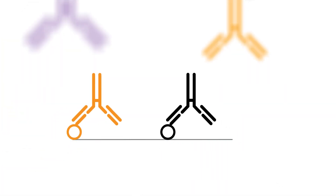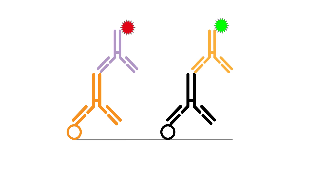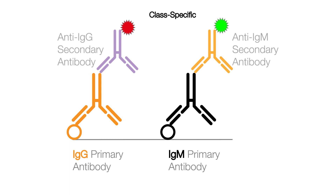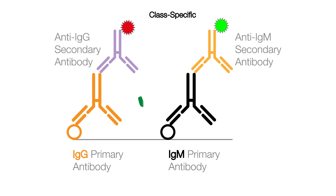Using primary antibodies from the same species but different antibody classes, such as IgG and IgM, in combination with appropriate secondary antibodies, is one way to overcome species issues.